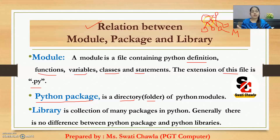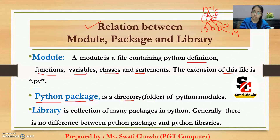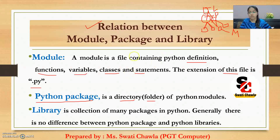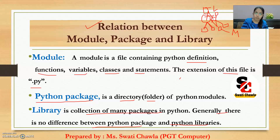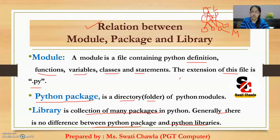Now, what is a library? A collection of these packages is called your library. Library is at the topmost directory — a collection of all the packages. A library is a collection of many packages in Python. Generally, there is no difference between Python package and Python library in the sense that library is your collection of packages, and package is a collection of modules. This is the main relationship between these three terms.